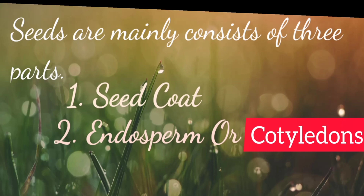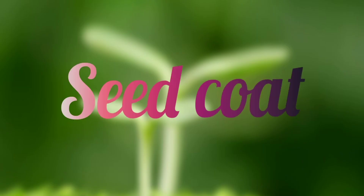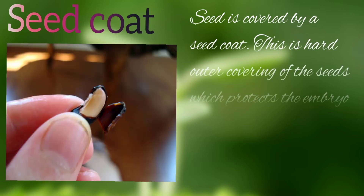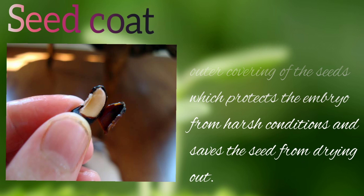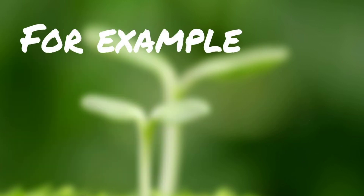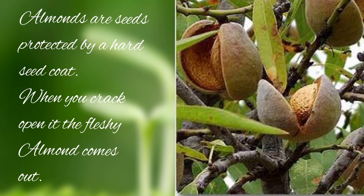First, we will study about seed coat. A seed is covered by a seed coat. This is the hard outer covering of seeds which protects the embryo from harsh conditions and saves the seed from drying out. For example, almonds are seeds protected by a hard seed coat. When you crack open it, the fleshy almond comes out.